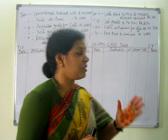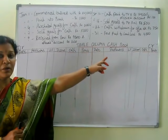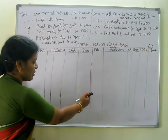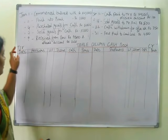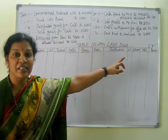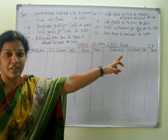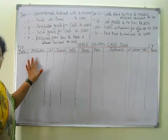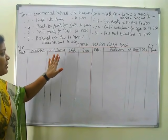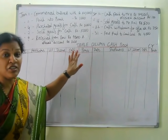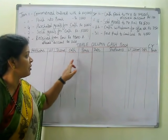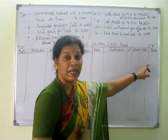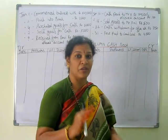So the columns will be like this. Triple column cash book — as usual, making it two parts: debit side and credit side, writing DR and CR. Columns: date, particular, LF, and three columns — discount, cash, bank. In the same way on the credit side: date, particular, LF, and discount, cash, bank — three columns.